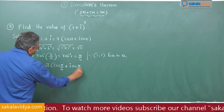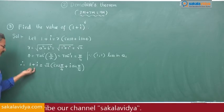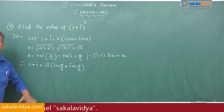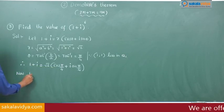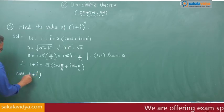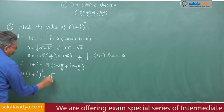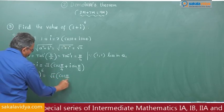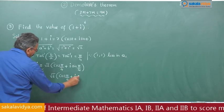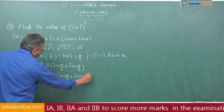In the last module we discussed how to convert Cartesian form into polar form — this is that polar form. Now, coming to the problem: (1 + i)^6 = [√2 (cos π/4 + i sin π/4)]^6.